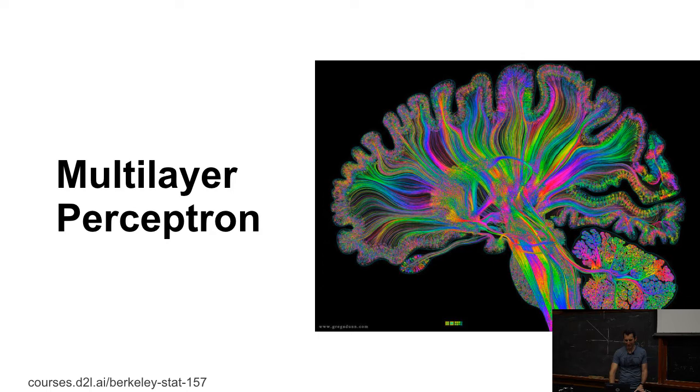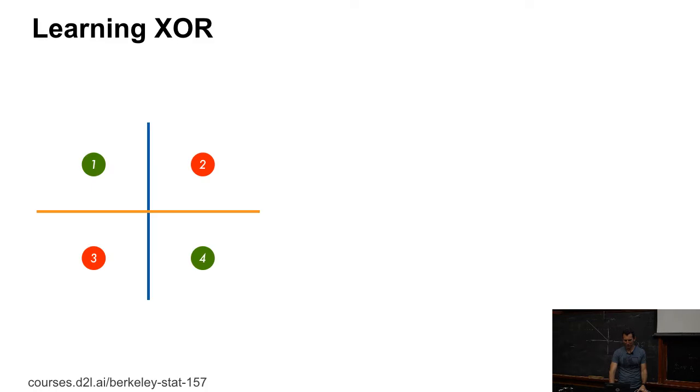Now, the obvious solution in hindsight is to go to more than one layer. And mind you, the brain does the same thing, so there's this pretty picture of the brain and its connectivity structure.